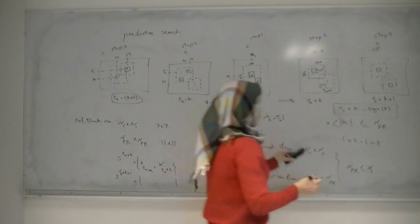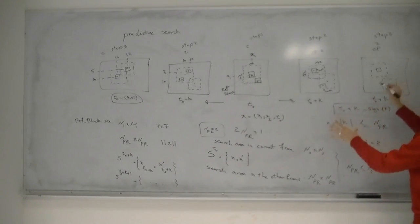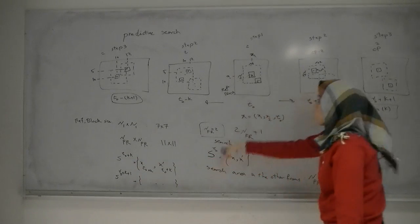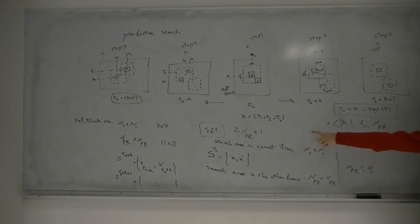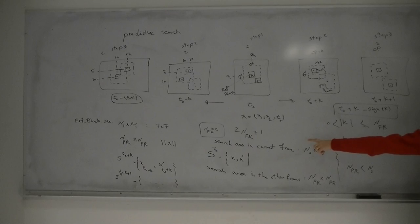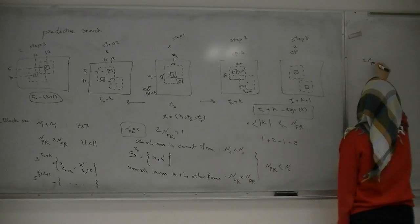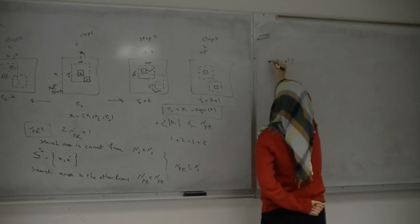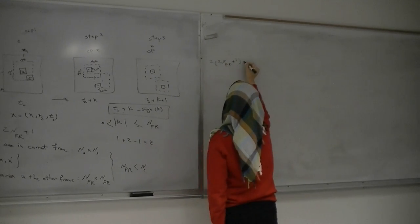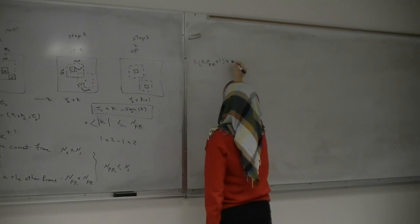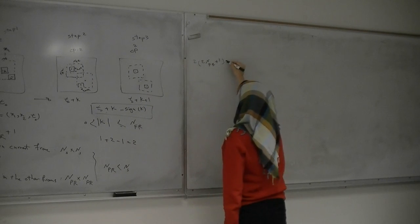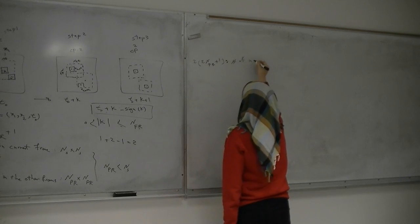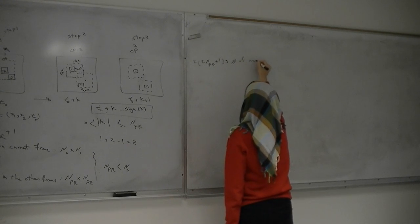After finding all of the sets S for each frame, because we have two candidates and 2*NFR plus one frames, we get a certain number of similar blocks total.